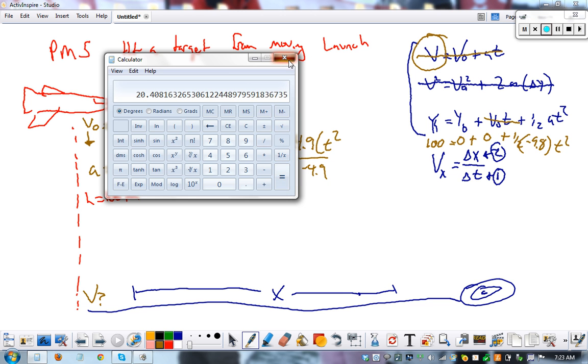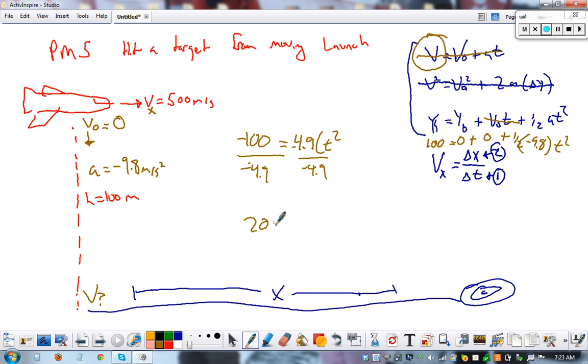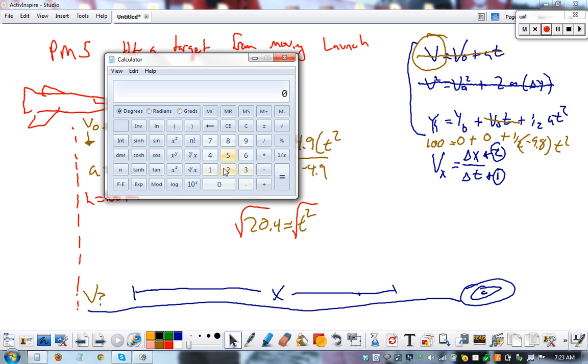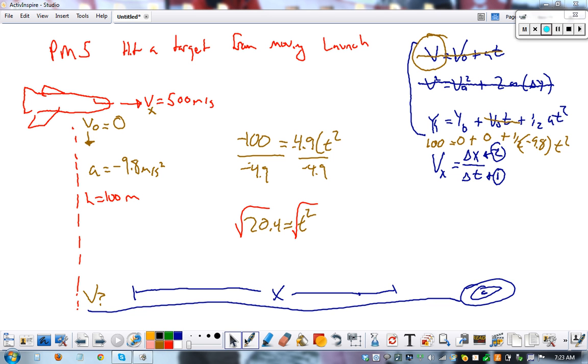20.4. So 20.4 equals t squared. The last step is to square root both sides. So it's going to fall for 4.5 seconds total. So it takes 4.5 seconds to hit the ground.